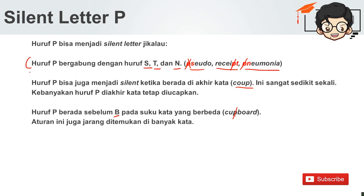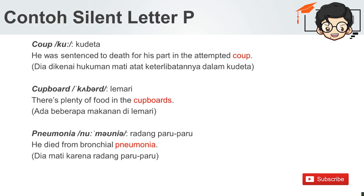Contohnya seperti apa? I'm going to show you the examples. Kita punya kata 'coup' — kudeta. Dalam bahasa Indonesia kita sering bilang 'kup', tapi dalam bahasa Inggris kita sebut 'ku'. He was sentenced to death for his part in the attempted coup. Dia dikenai hukuman mati atas keterlibatannya dalam kudeta.